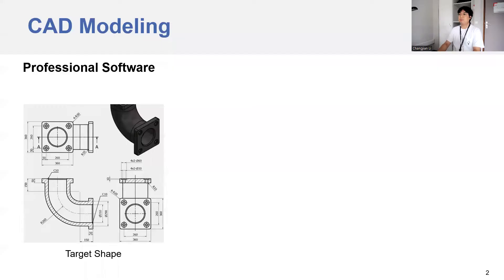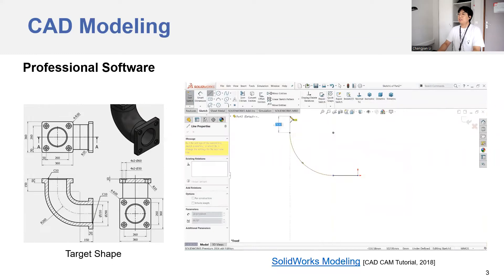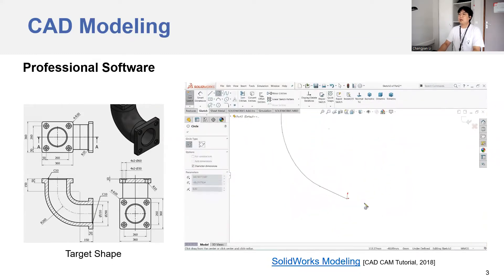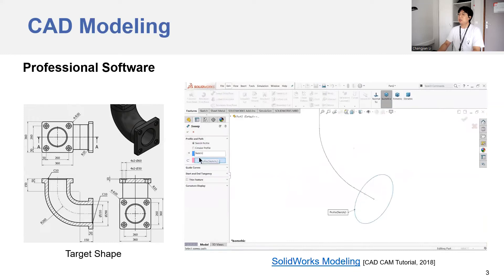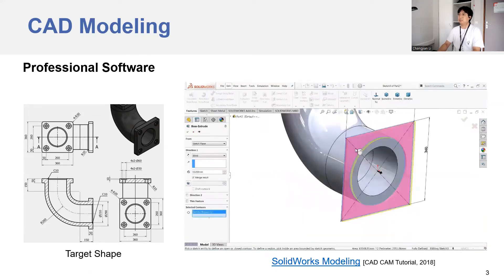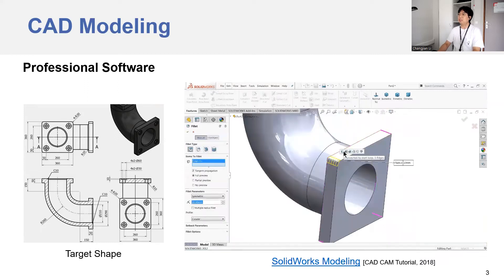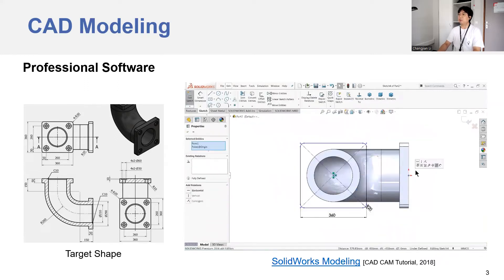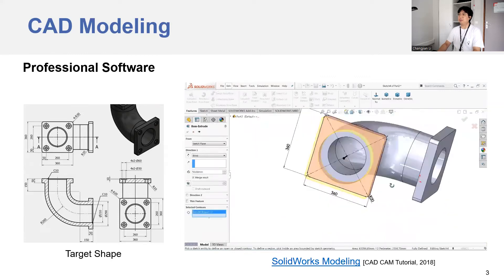Now let's see how it works. When it comes to CAD modeling, there are several popular methods. The most traditional one is to use professional software. For example, given the target shape, we can model it using professional workflows. As we can see here, modelers keep rotating and translating the shape, and selecting different commands. After tedious operation, the middle banded cylinder is built first, and the two rectangular parts at each end are modeled in the following.